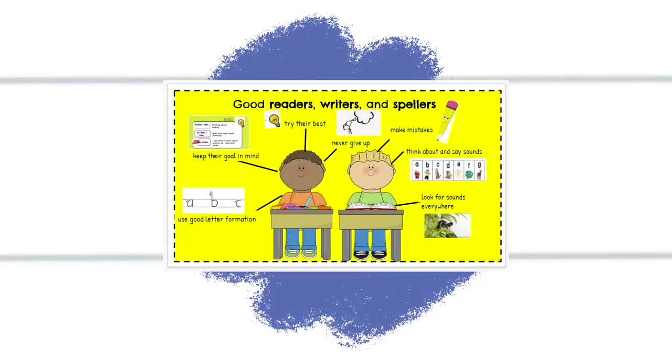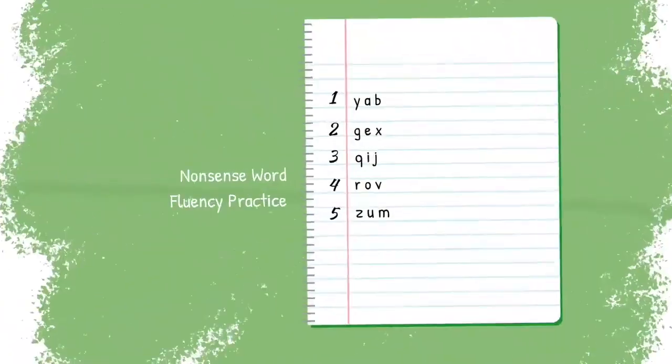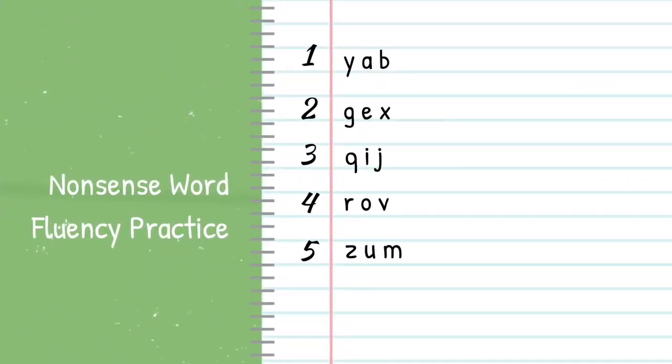My readers, writers, and spellers, we are ready to practice our nonsense word fluency. With this exercise, I want you to make sure that as you are saying the word, before you say the whole word, pop it up or stretch it out so that you are practicing identifying each sound as you see it and read it. So let's look at that first one. Y-ab. Now put it all together. Yab. And the last one, Z-um.